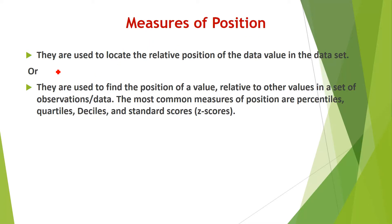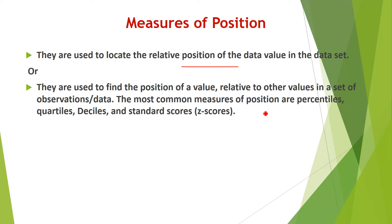Measures of position are used to locate the relative position of a data value in a data set. For example, suppose you have numbers 10, 20, 30, 40, and so on — if you are considering 20, you need to find the relative position of 20 in that data set. They are used to find the position of a value relative to other values in a set of observations. The most common measures of position are percentiles, quartiles, deciles, and standard scores or Z scores.